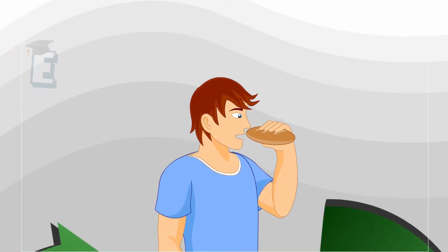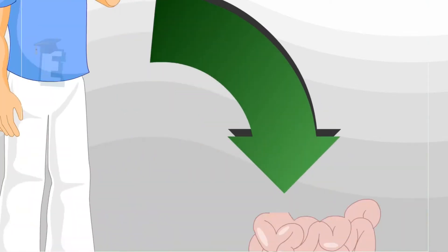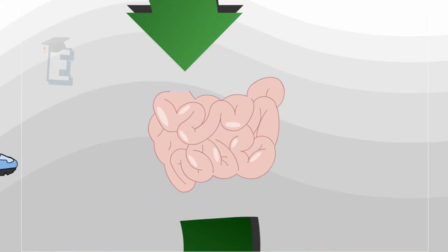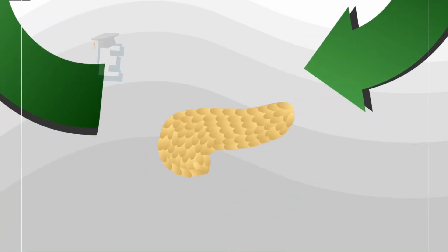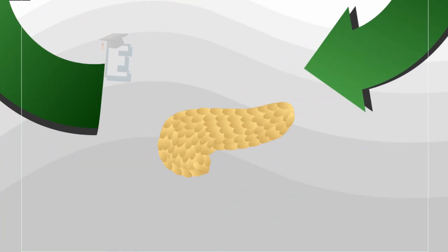When someone eats, his intestines absorb glucose during digestion, and glucose level in the bloodstream increases. The pancreas responds to high glucose level by producing the hormone insulin.